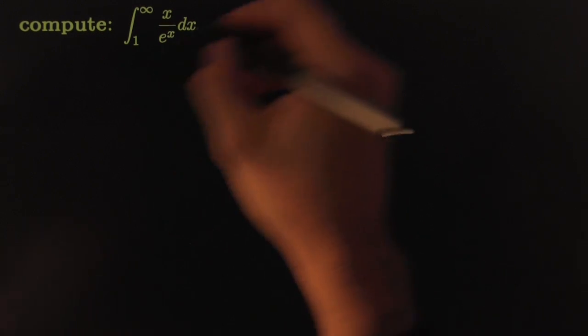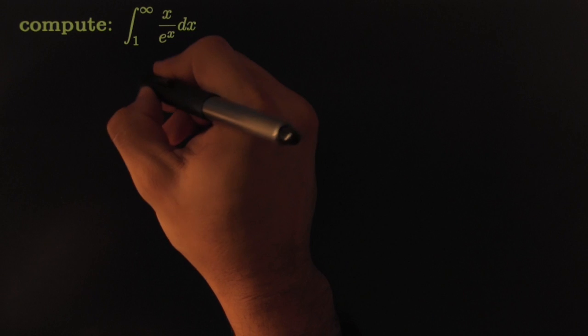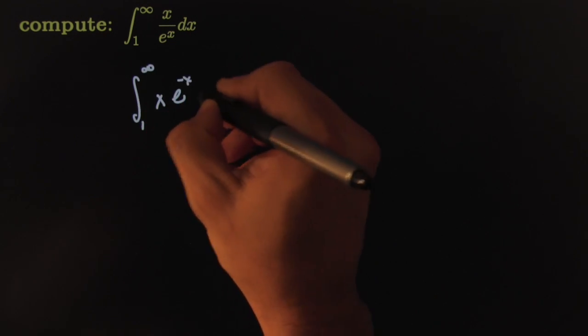All right, so we start off with something basic here. We just try to do the integral, so this will become the integral from 1 to infinity, x, e to the negative x, dx.